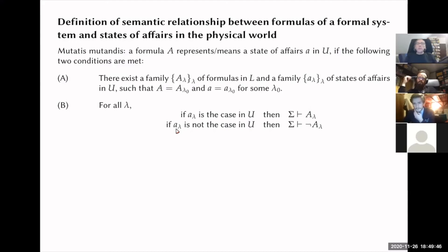And if the corresponding small a lambda is not the case in U, then the small a lambda corresponds here a capital A lambda in this pairing, and that capital A lambda must be such that the negation is a theorem.